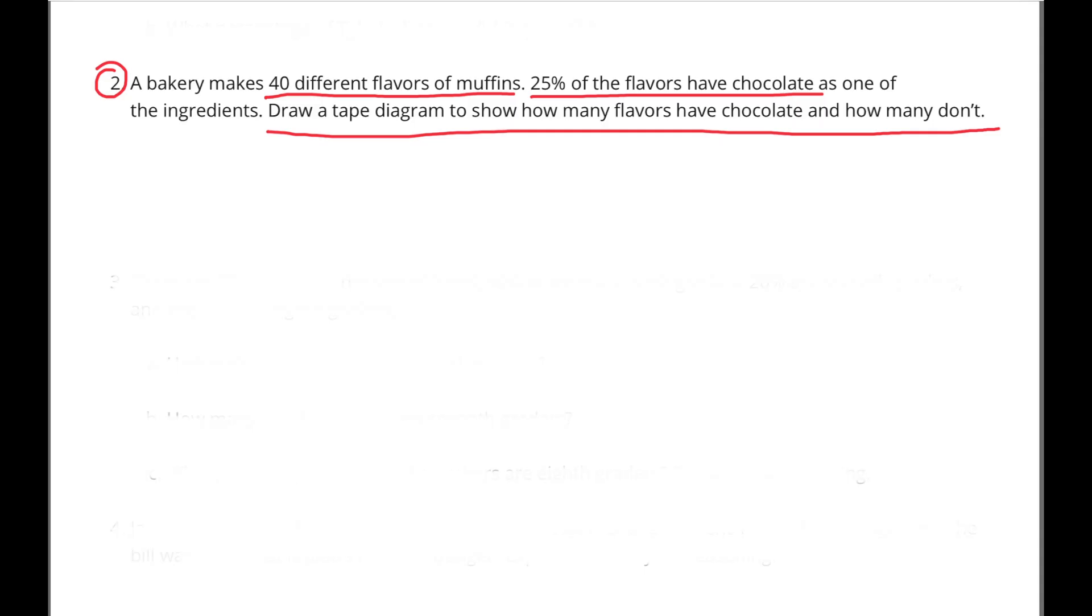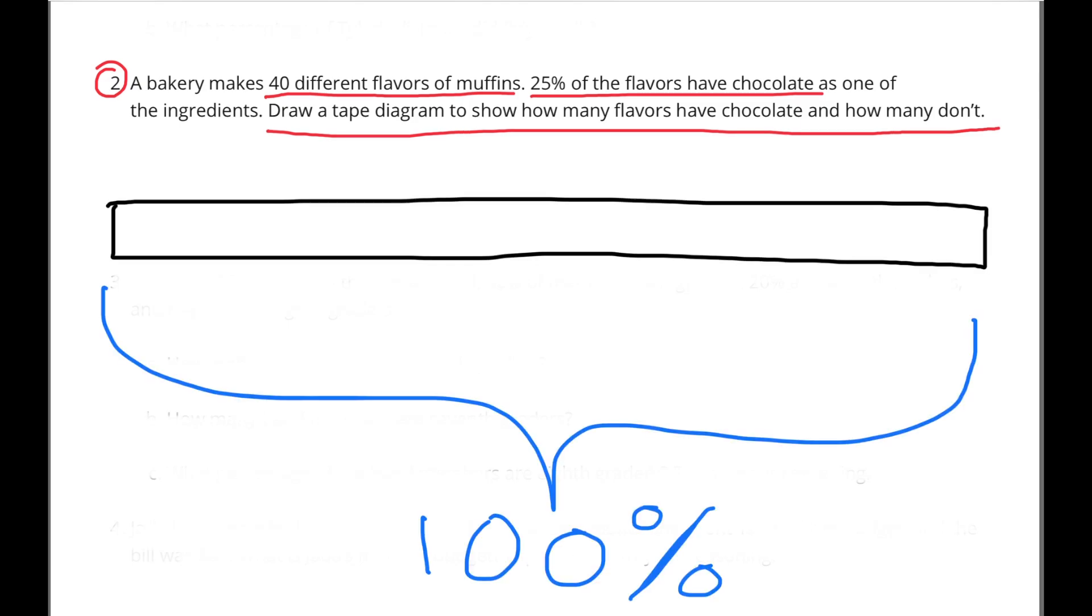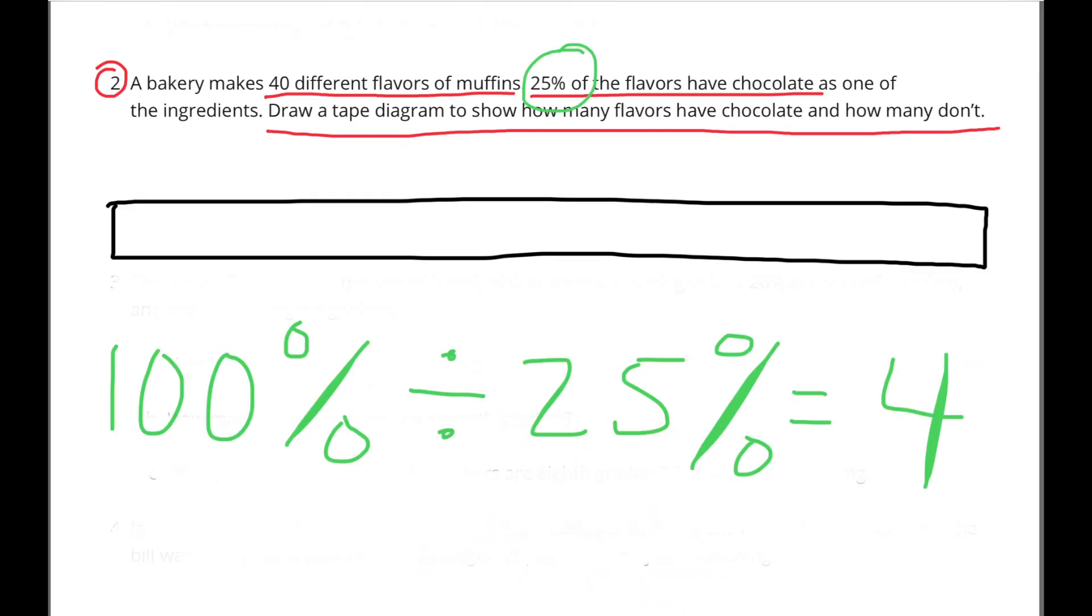Number 2: A bakery makes 40 different flavors of muffins. 25% of the flavors have chocolate as one of the ingredients. Draw a tape diagram to show how many flavors have chocolate and how many don't. I've started out my tape diagram representing 100% of all the muffins. 100% of all the muffins divided by 25% of the muffins that have chocolate as one of the ingredients equals 4. So I divided my tape diagram into 4 sections.